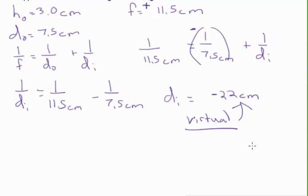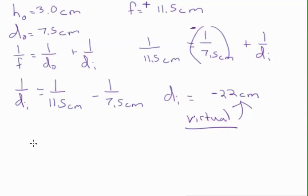Let's talk about the height of the image. We also know that HI over HO equals negative DI over DO.